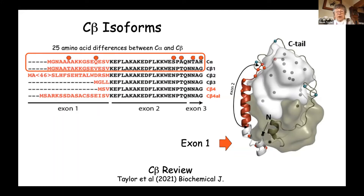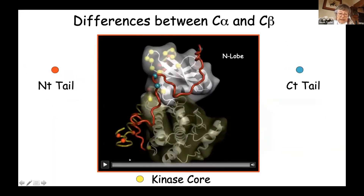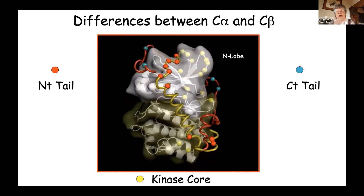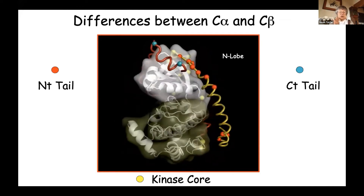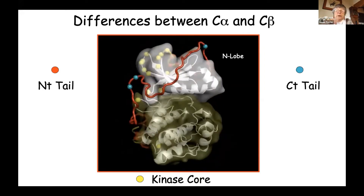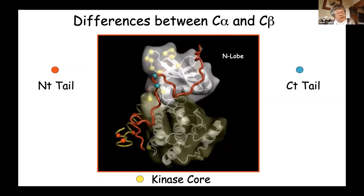There are only 25 amino acids different between C-alpha-1 and C-beta-1. The kinase core is conserved in all kinases — you can map any kinase to PKA and get a reasonable homolog structure. But the tails or domains that wrap around each kinase are different and really important for function. Sometimes just one or two amino acids can make a critical difference.